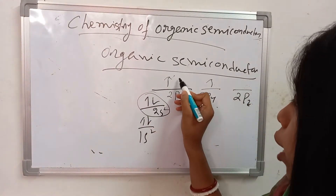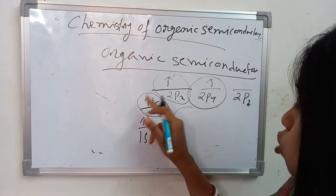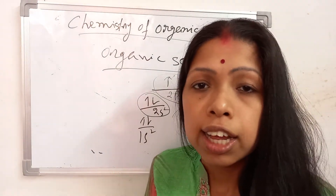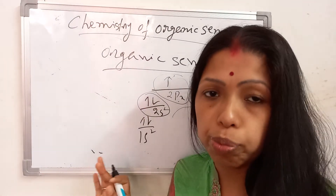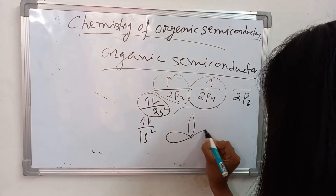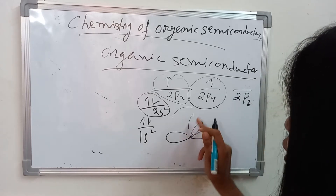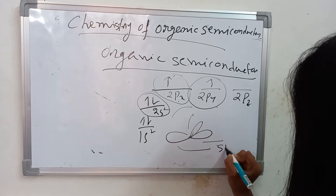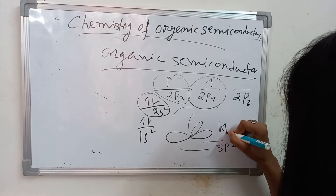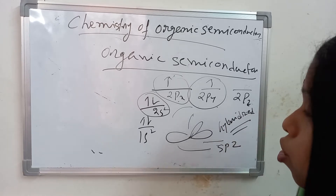Now, the 2s² orbital combined with 2px and 2py orbitals can create three half-filled sp2 hybridized orbitals. This is known as the sp2 hybridized orbital. These three orbitals hybridize to form sp2 orbitals.